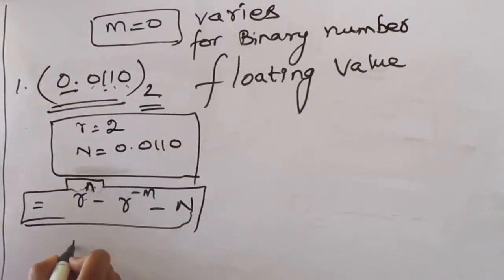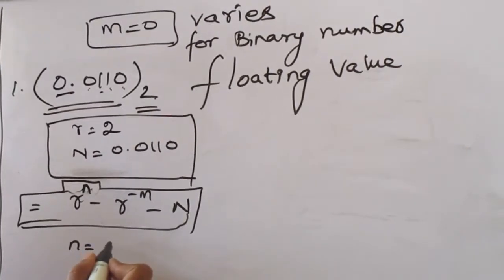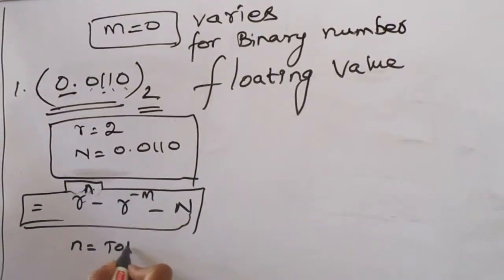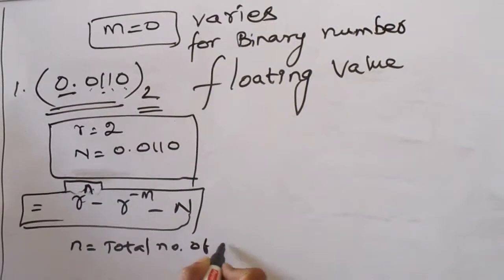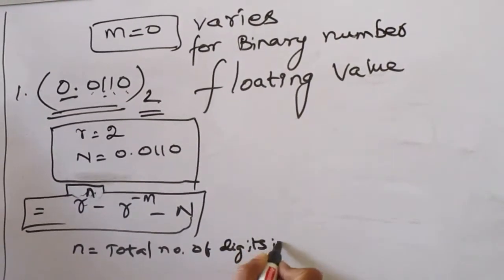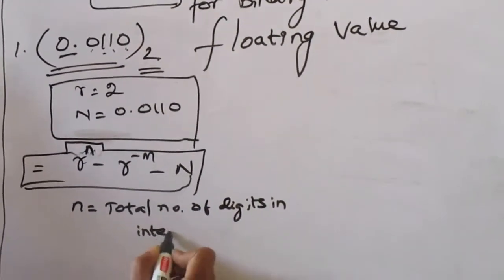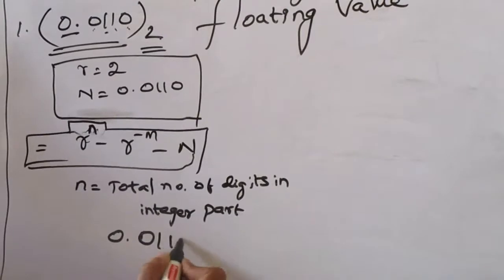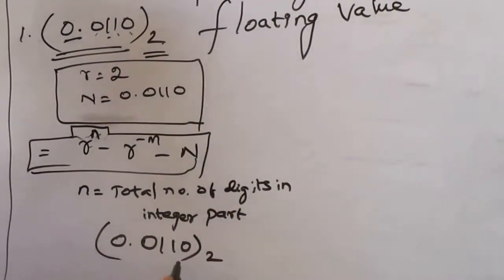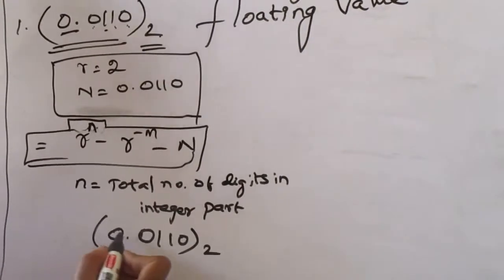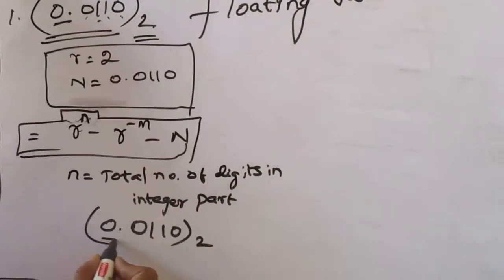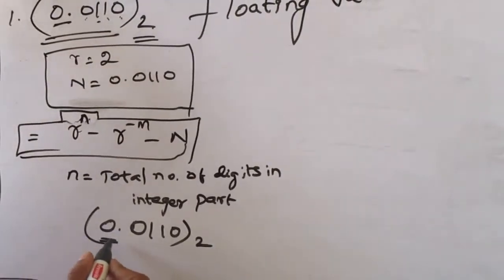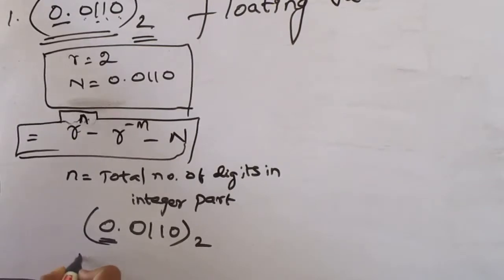Here the small n refers to the number of digits in the integer part — the total number of digits in the integer part. I will explain briefly. The number given is 0.0110, and we are going to find the one's complement. The integer part here has a total of 0 digits, so n is equal to 0.